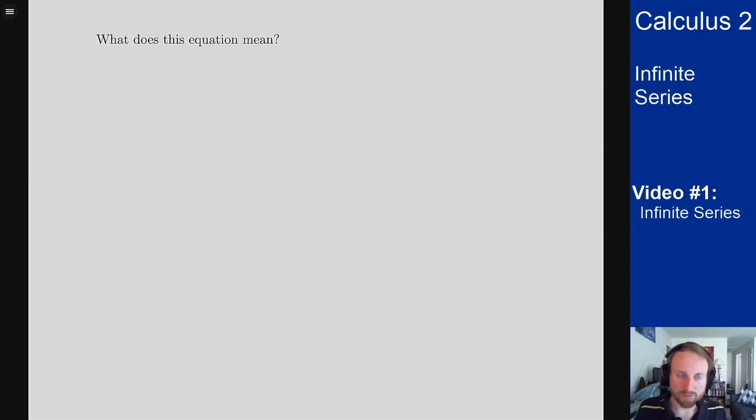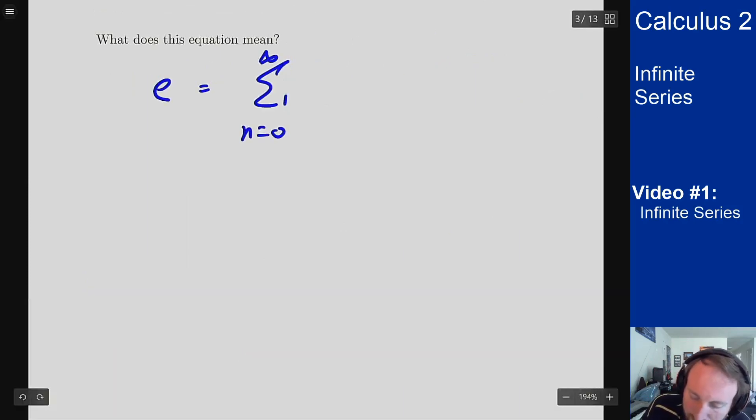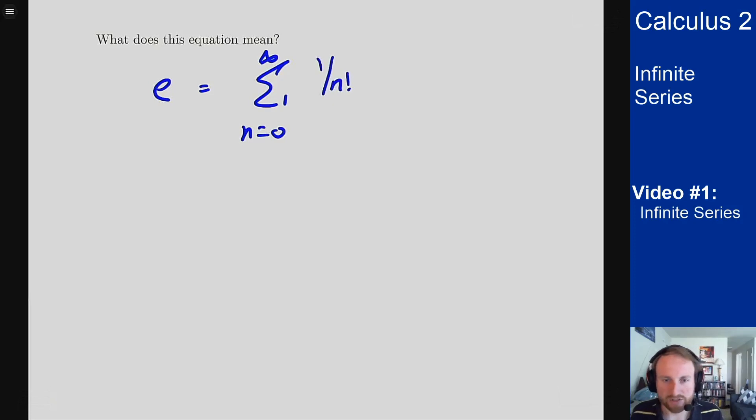So what does an equation like this mean? I had written before that e was equal to the sum from 0 to infinity of 1 over n factorial. What does that mean? I have a number on the left and I have this infinitely large sum on the right. What does this mean? Well, the way you want to think about this is kind of like when we were talking about improper integrals before.